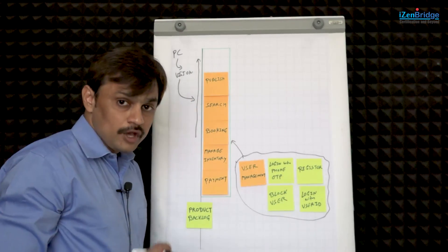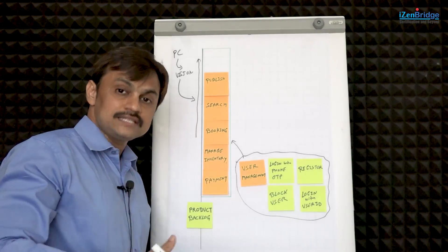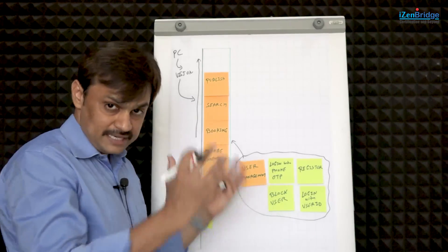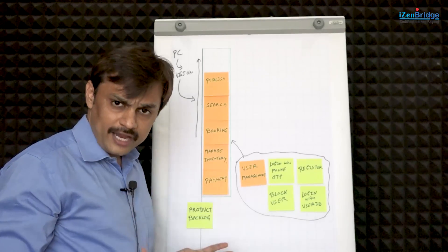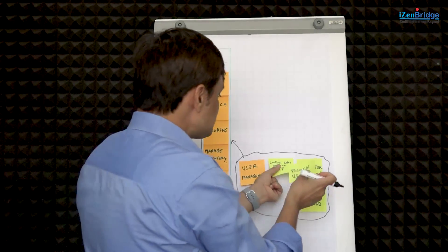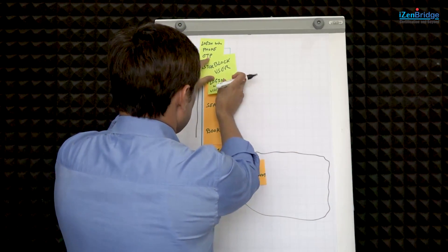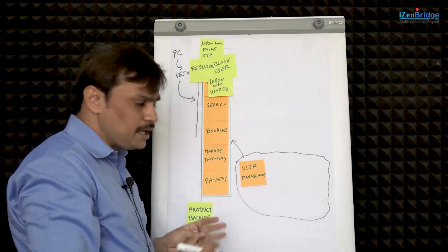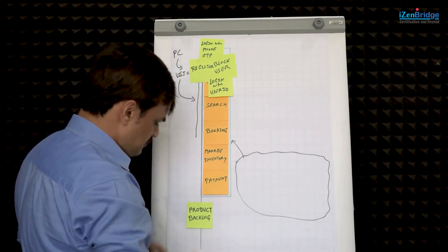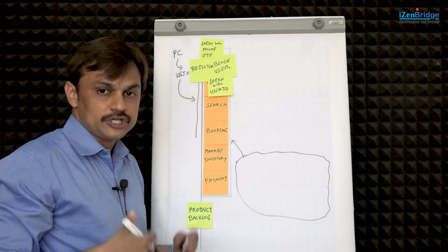To summarize: product backlog is a collection of things you want to build on the product, and these things are going to be progressively elaborated. This progressive elaboration and discovery happens in the backlog refinement meeting. When we divide a big requirement into smaller requirements, we put those smaller items back into the product backlog. The product backlog can contain very small, well-refined items as well as big items.